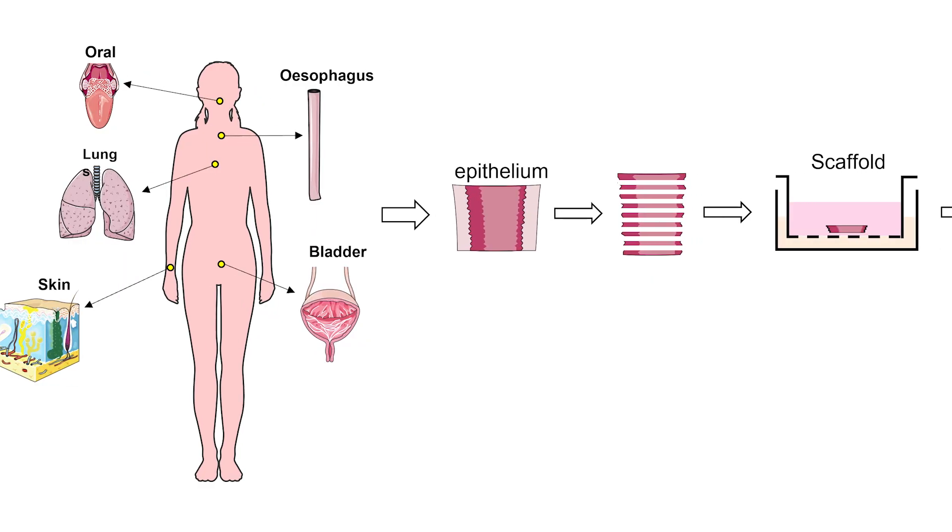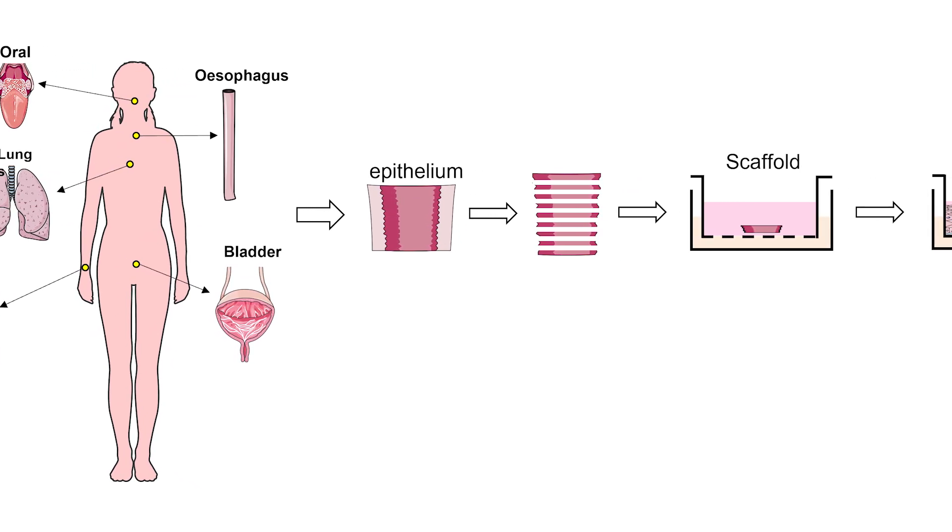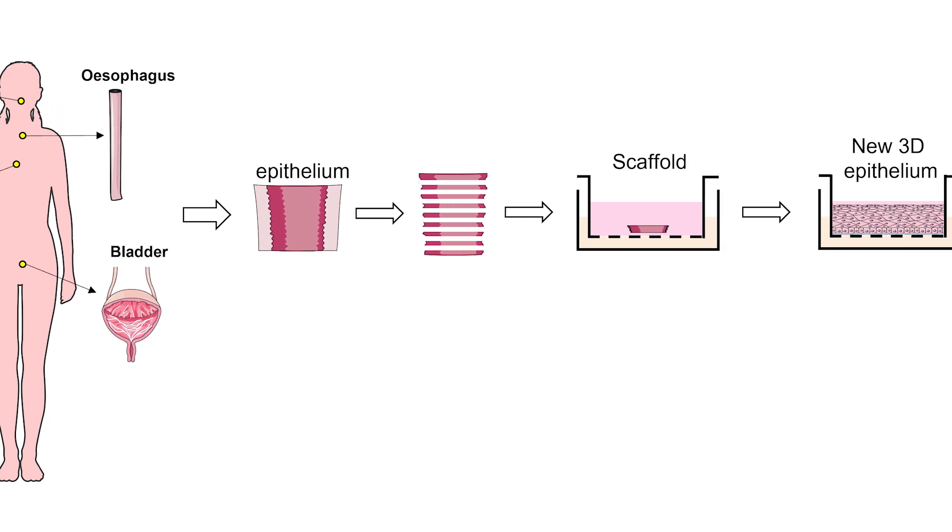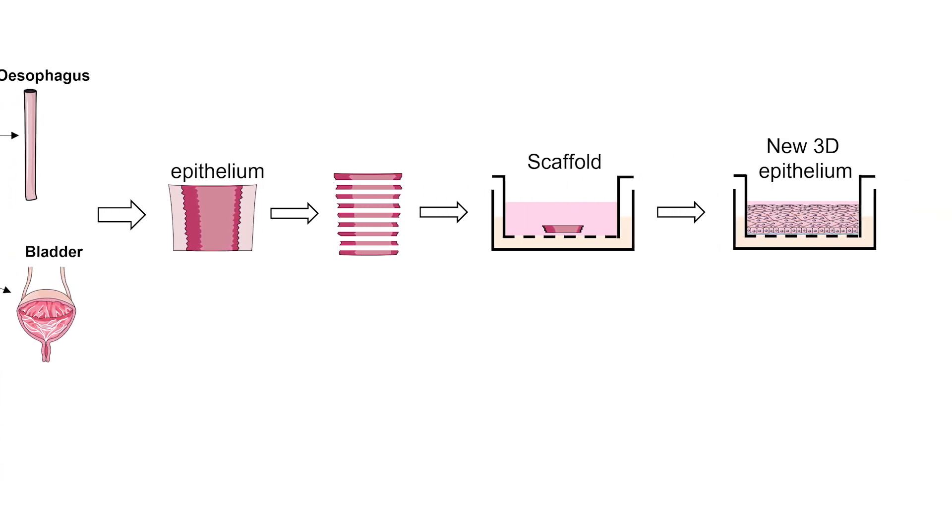This novel system takes advantage of the regeneration capacity of epithelial tissues to set up a primary 3D culture that resembles the original structure and long-term behavior of those cells in vivo.